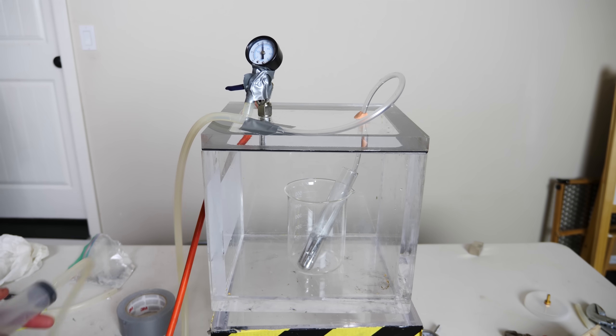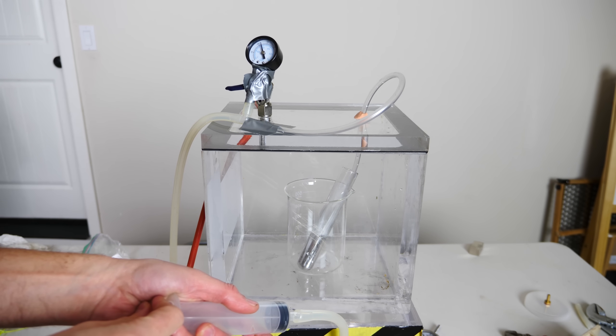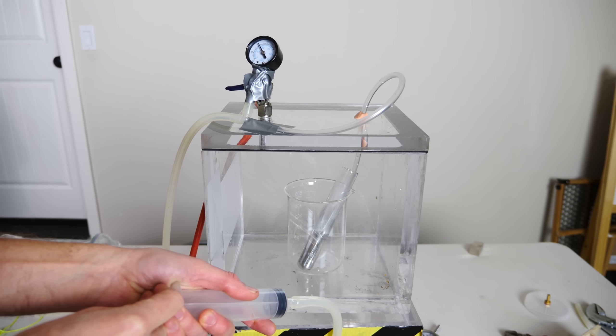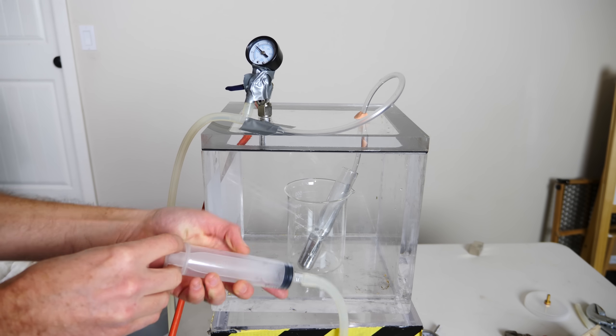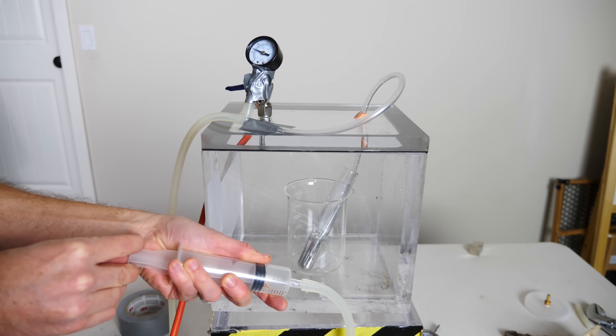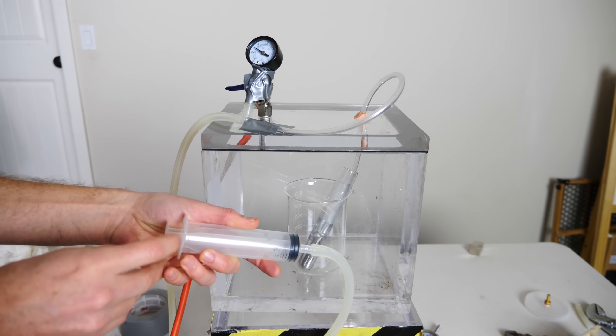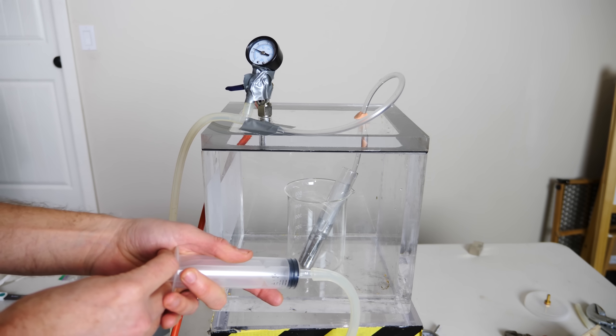So again the air is bubbling through. So at half an atmosphere I can still pull it up into the tube. You can see pulling it about halfway as we get to more and more of a vacuum.